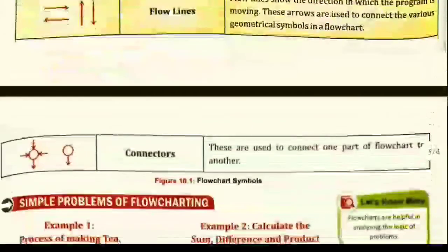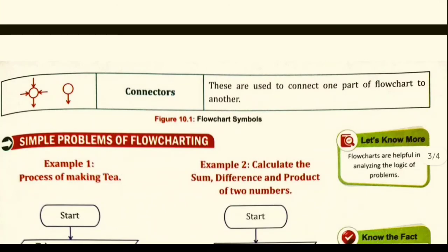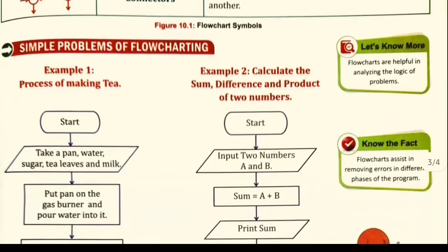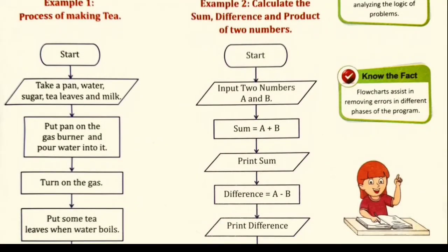A connector can be used to connect one part of a flowchart to another. For the process of making tea, we start by taking a pan, water, sugar, tea leaves, and milk. The next step is to put the pan on the gas burner.